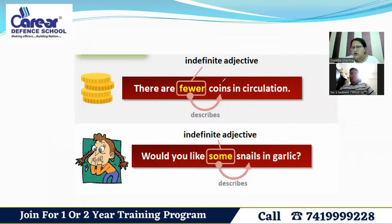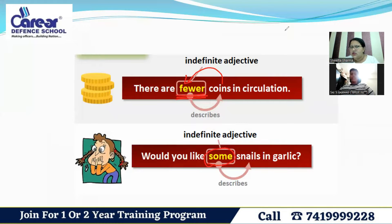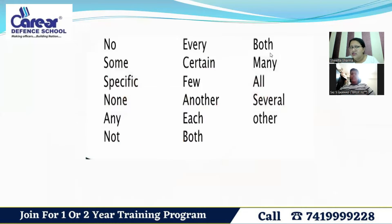For example: 'There are few coins in circulation.' Here, 'few' gives only a tentative idea, so it is an indefinite numeral adjective. Another example: 'Would you like some snails in the garlic?' — 'some' is again an indefinite numeral adjective because there is no exact number given.